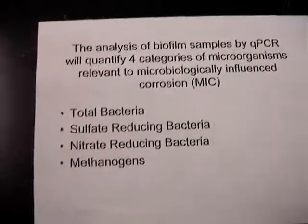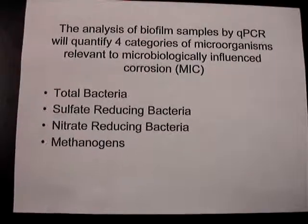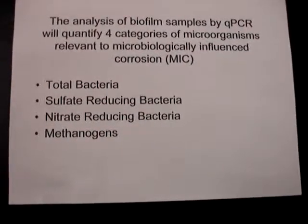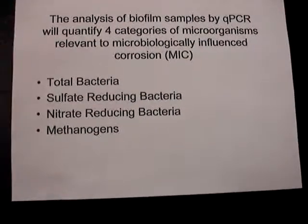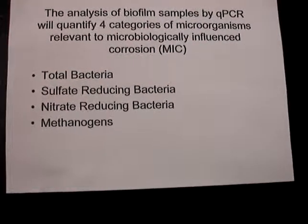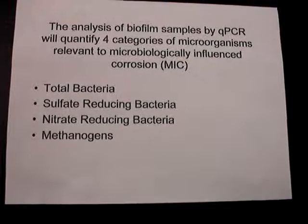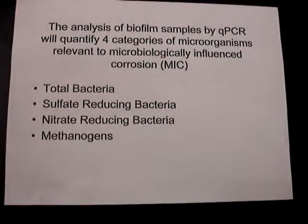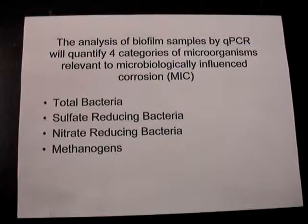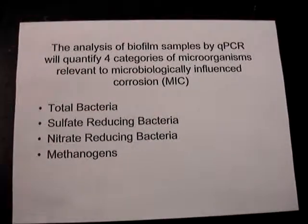For corrosion monitoring using genetic techniques, the results you'd get would be total bacteria, the sulfate reducing population, the number of nitrate reducers and methanogens. All of those organisms are relevant to microbial corrosion, and it's convenient, accurate, fast, and cheap to get the data using qPCR.